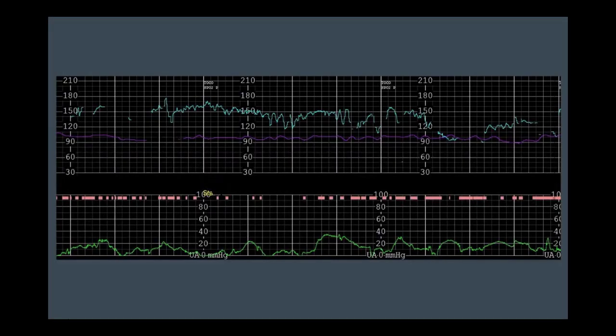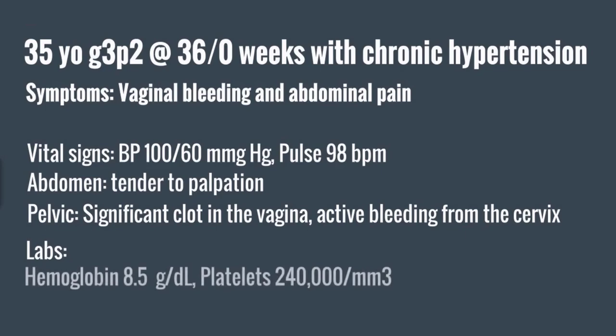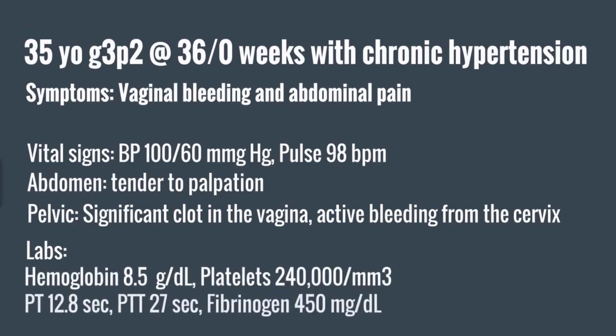Tocometry demonstrates uterine tachysystole. Labs demonstrate a hemoglobin of 8.5, platelet count of 240,000, prothrombin time of 12.8, activated partial thromboplastin time of 27, and fibrinogen of 450. Her symptoms are concerning for placental abruption, and she is presenting with abdominal pain and bleeding.